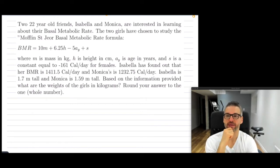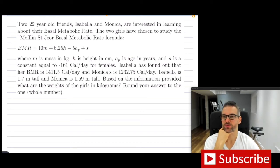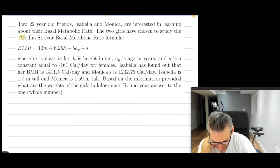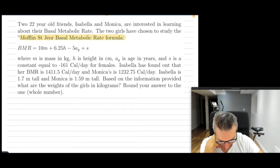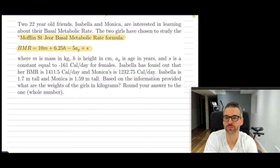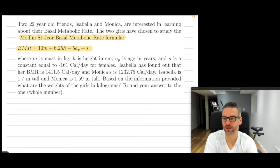We're going to be dealing with the metabolic rate. We have two 22-year-old friends, Isabella and Monica. They've chosen to study a particular metabolic rate formula. In the formula, m is mass in kilograms, h is height in centimeters, a subscript y is the age in years, and s is a constant equal to negative 161 calories per day for females.